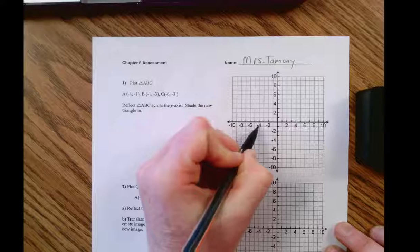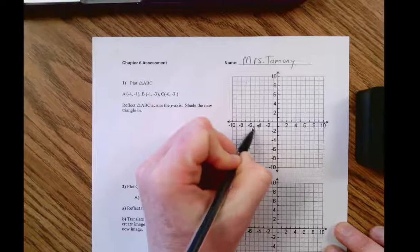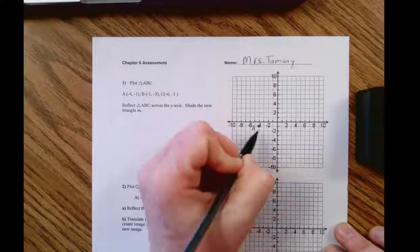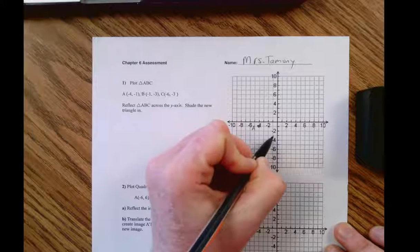So we have negative four, negative one. There's A. Negative one, negative three. There's B.